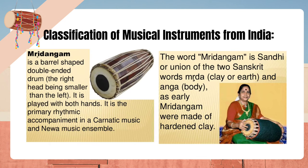Mridangam is a barrel-shaped double-ended drum, the right head being smaller than the left. It is played with both hands. It is the primary rhythmic accompaniment in a Carnatic music and Newa music ensemble. The word Mridangam is a union of two Sanskrit words: merda, meaning clay or earth, and anga, meaning body, as early Mridangams were made of hardened clay.